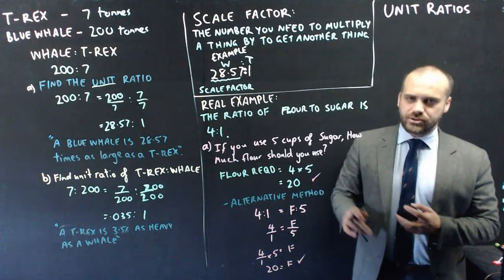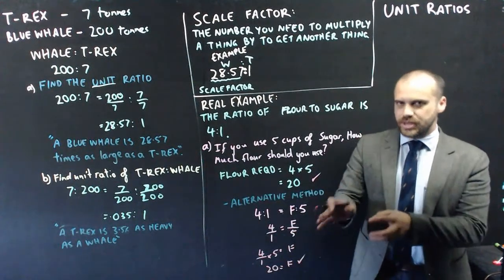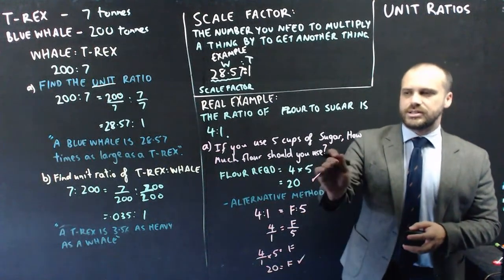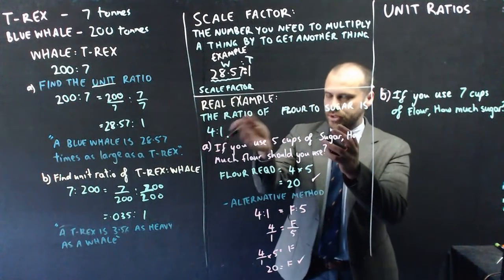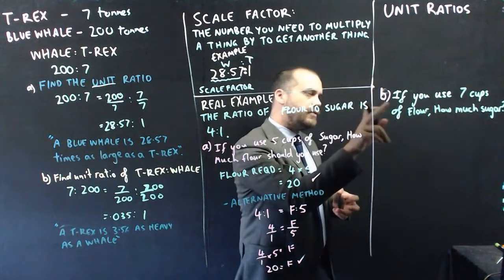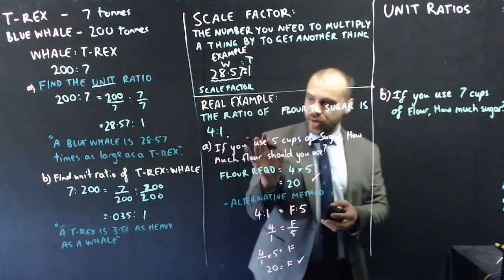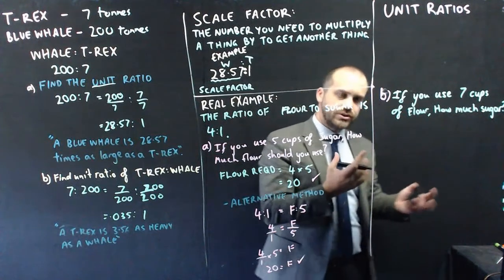I really like this alternative method because there's one more little question I want to show you where this method is probably a little bit easier to understand. And here's my last question. We're continuing on with this. We've still got a ratio of flour to sugar as 4 is to 1. If you use 7 cups of flour this time, so flour is this number here, how much sugar should you use?